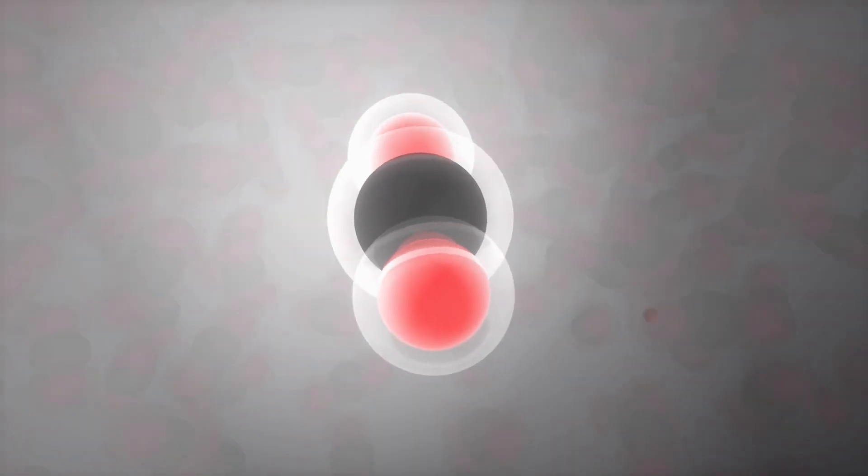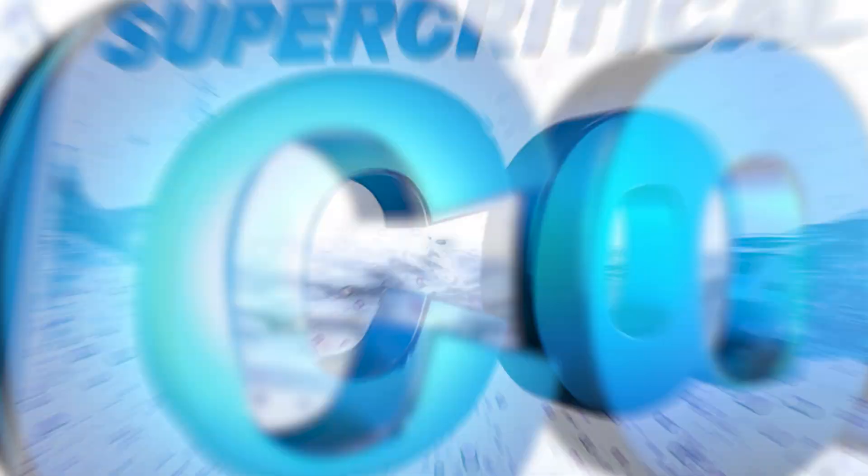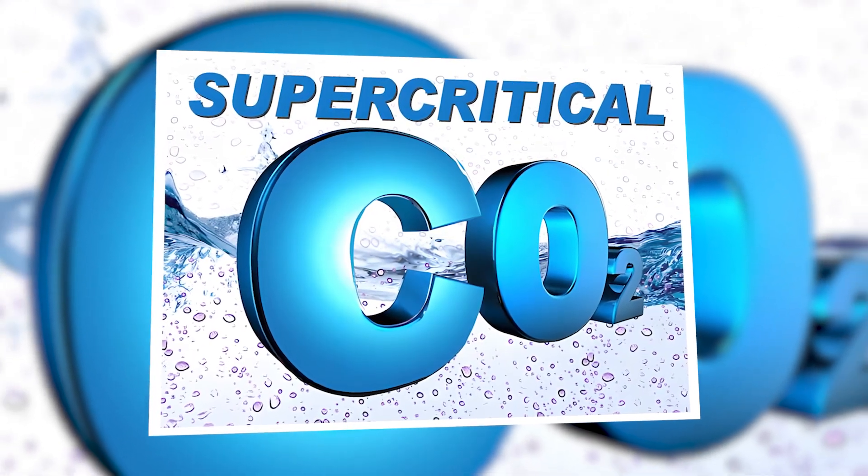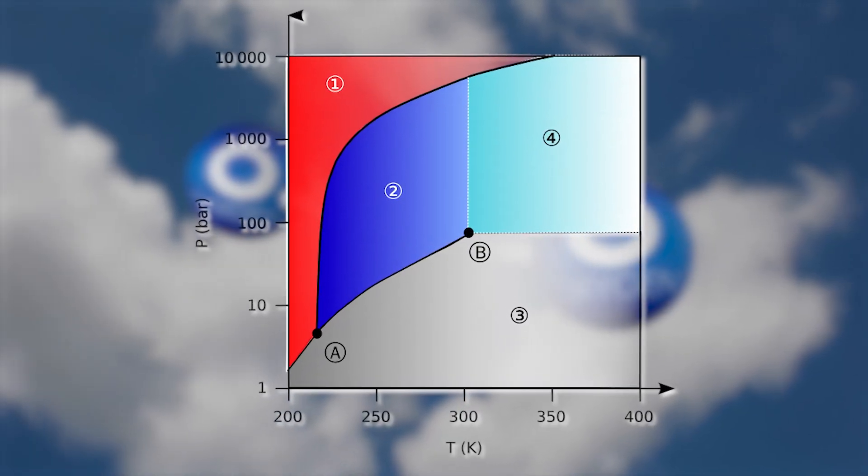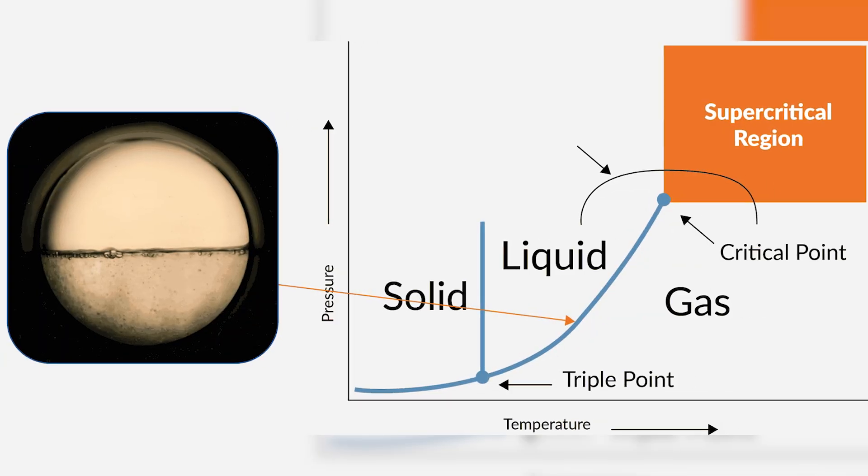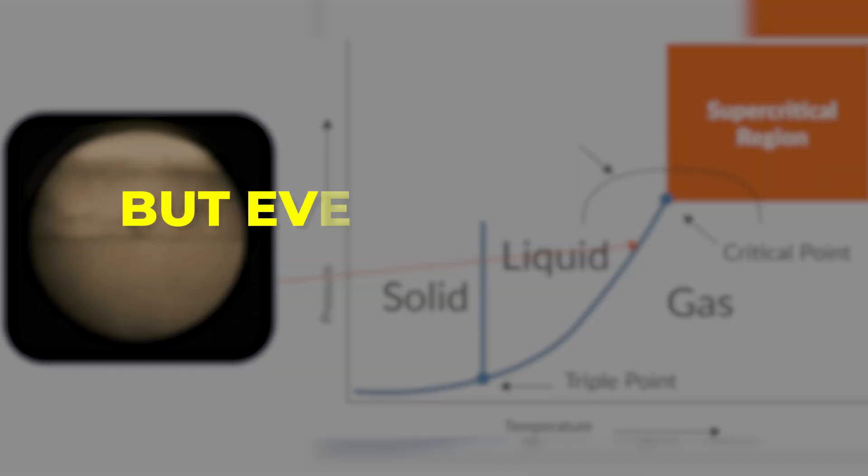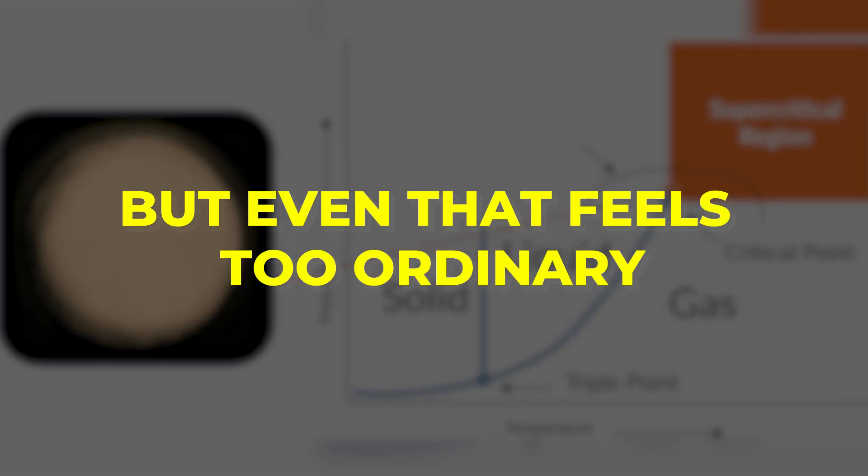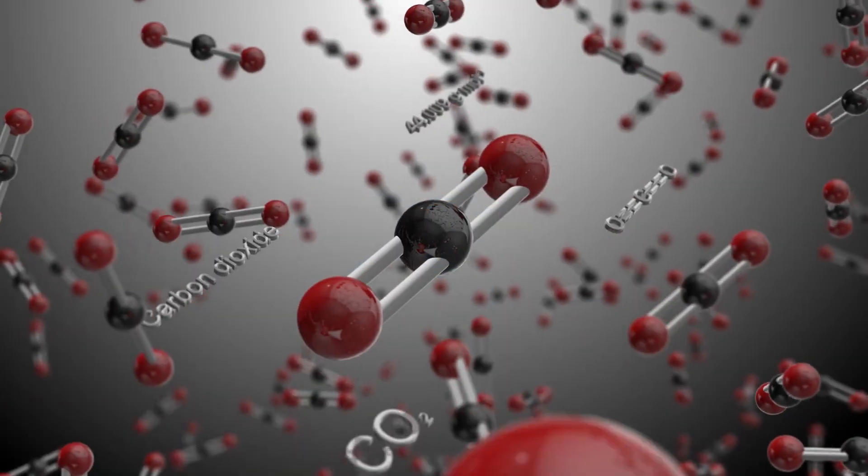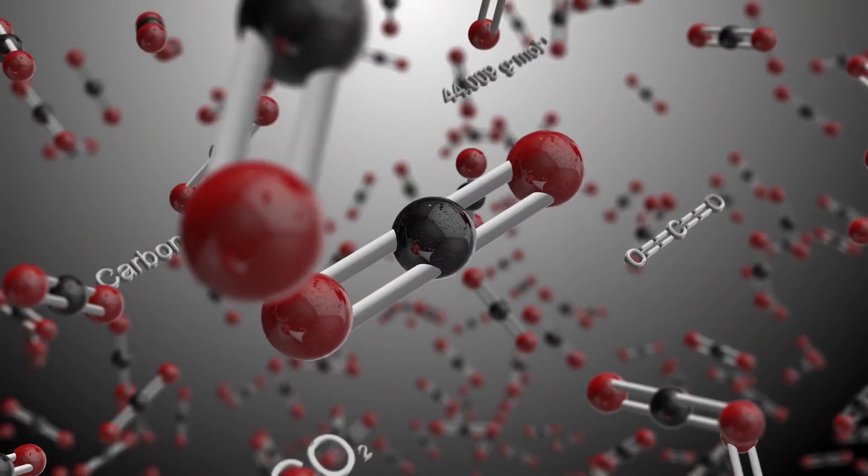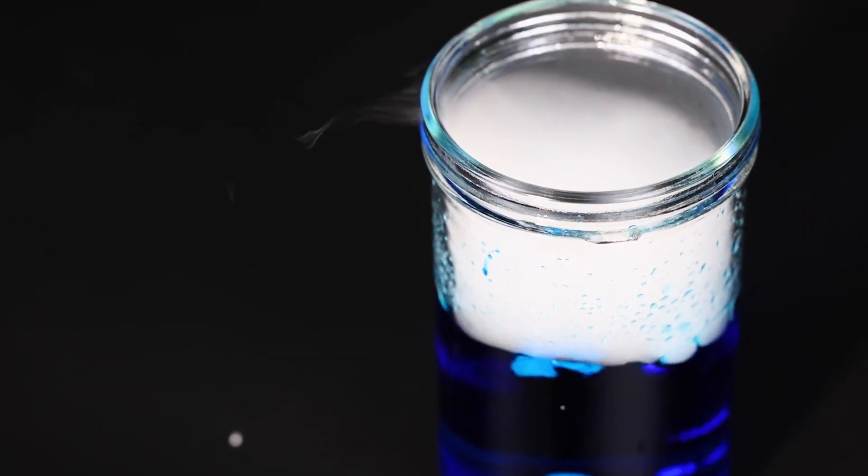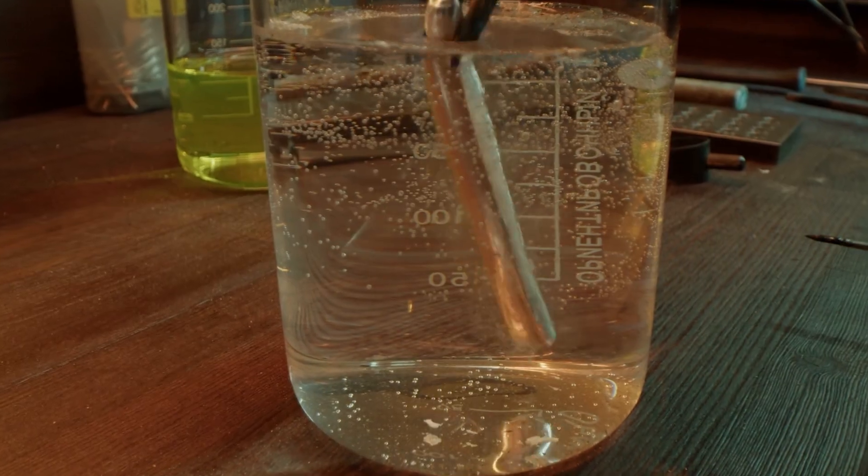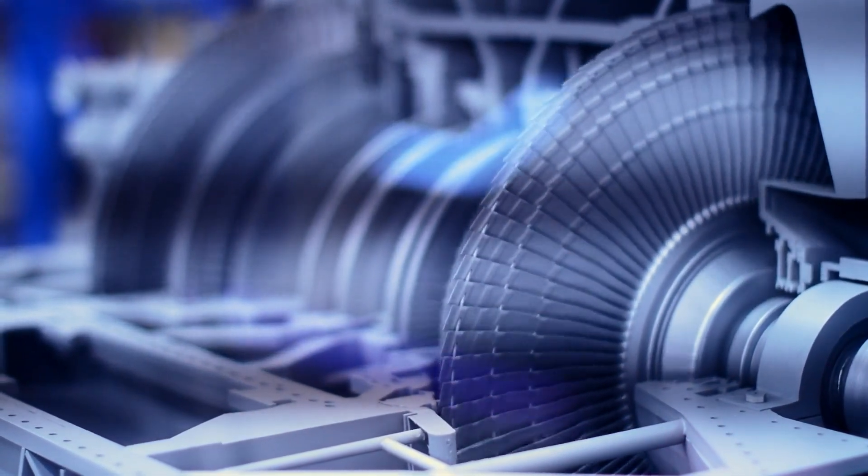Supercritical carbon dioxide refuses to behave as expected. It doesn't boil. It doesn't condense. It exists in a strange middle ground. Not quite a gas. Not quite a liquid. Scientists call it a fluid. But even that feels too ordinary. Under high heat and pressure, CO2 reaches a point where the line between phases vanishes. It moves like a gas, but with the density of a liquid. In that state, something remarkable happens.